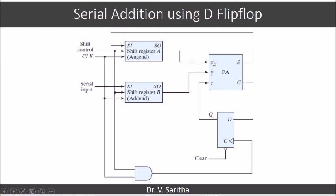LSB of A will be given as input X. LSB of B will be given as input of Y. Initially, the D flip-flop value will be 0, so Z will be 0.